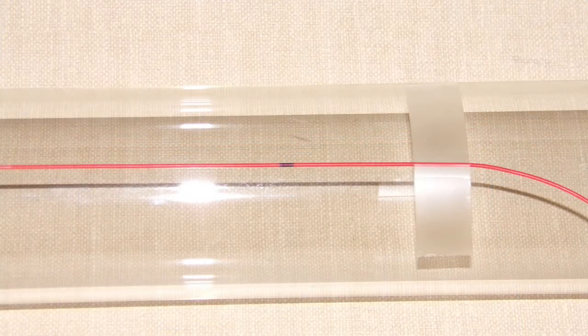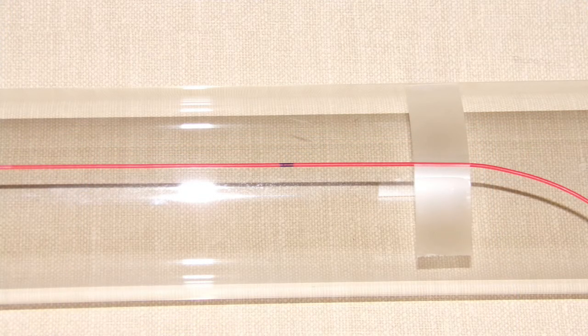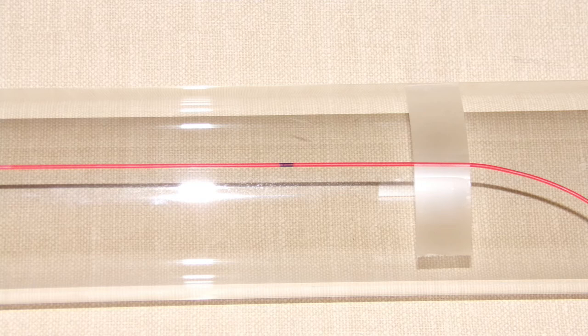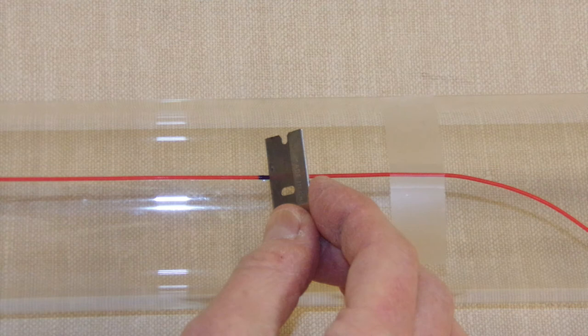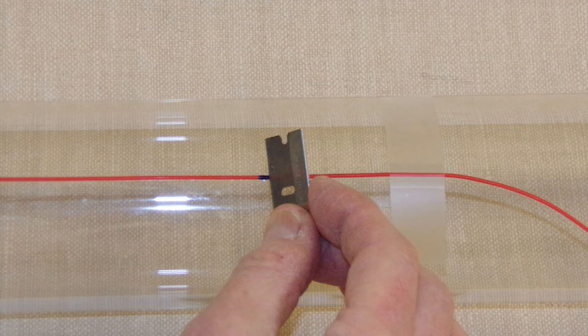After the adhesive has hardened completely, it is time to cut the side wires to the correct length. Use a razor blade or sharp knife to cut directly through the side wire at the blue mark. Be careful not to scratch the surface of the plasma tube.